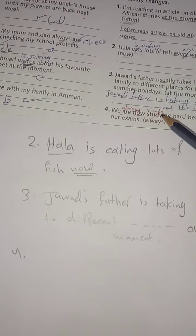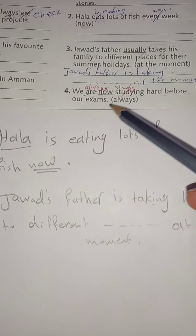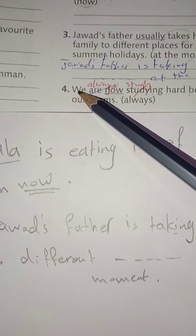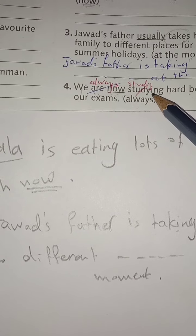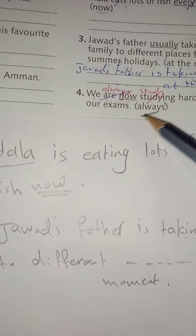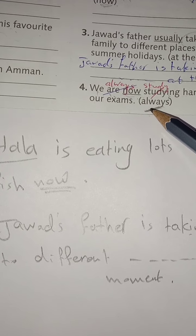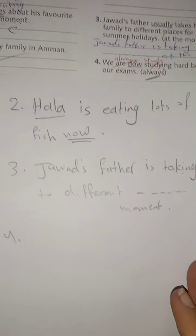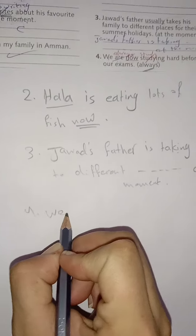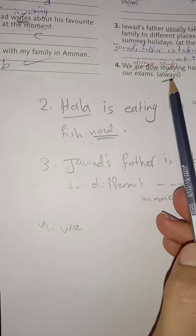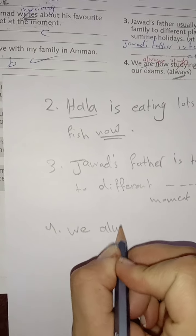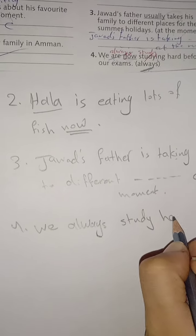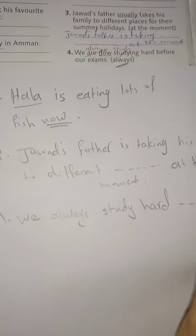Number four: 'We are now studying hard before our exams.' Now — present continuous — we are + verb with -ing — here we have a plural subject. Replacing with 'always' — always is a keyword for present simple — لازم حالها present simple. Plural subject: put the verb without any change. Always goes before the main verb: 'We always study hard before our exams.'